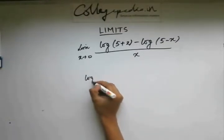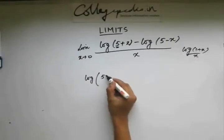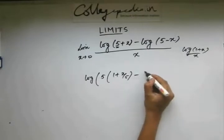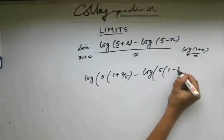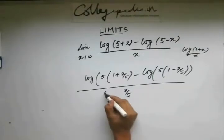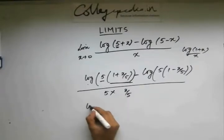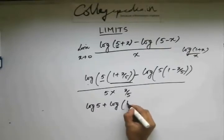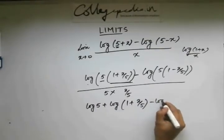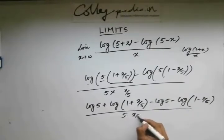This one we can write as - first of all, here we have 5 but we need 1, right? In the standard result we have log 1 plus x by x. So what I'll do is I'll take 5 common. I'll write this as 1 plus x by 5. Again, whatever term I have here, I should have the same term here. So let's take x by 5 and multiply this by 5 here. Now this is of the form log a into b. So this one I can expand as log 5 plus log 1 plus x by 5 minus log of 5 minus log 1 minus x by 5. This and this gets cancelled.